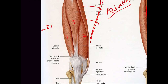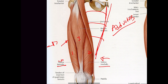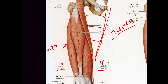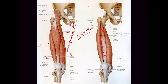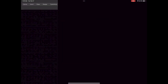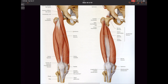If you ever go to the gym, you'll know you have an interior, exterior, and a top of that muscle group. They are called the vastus lateralis, vastus medialis, and the one on top is the rectus femoris.